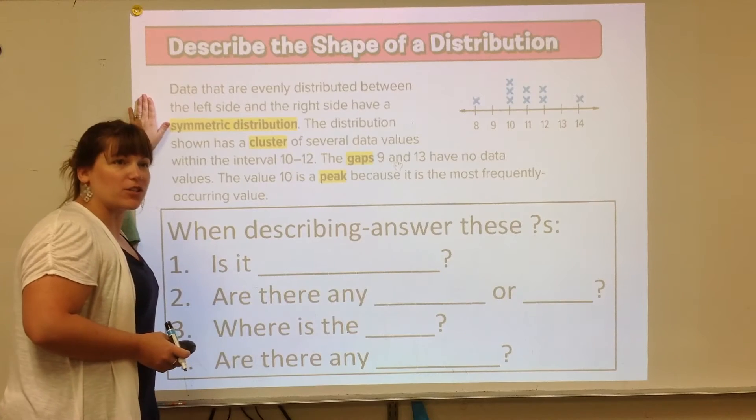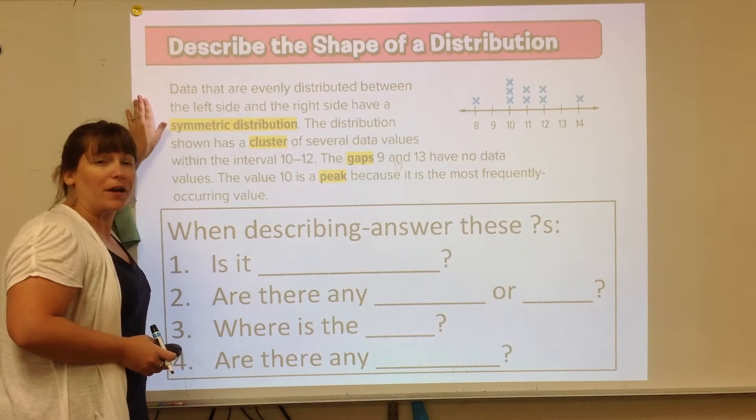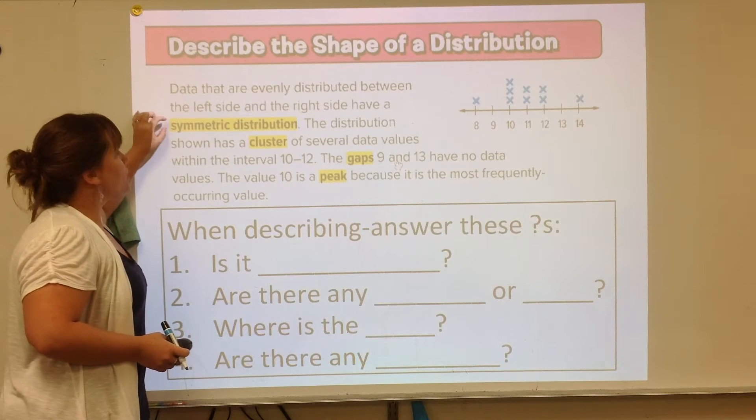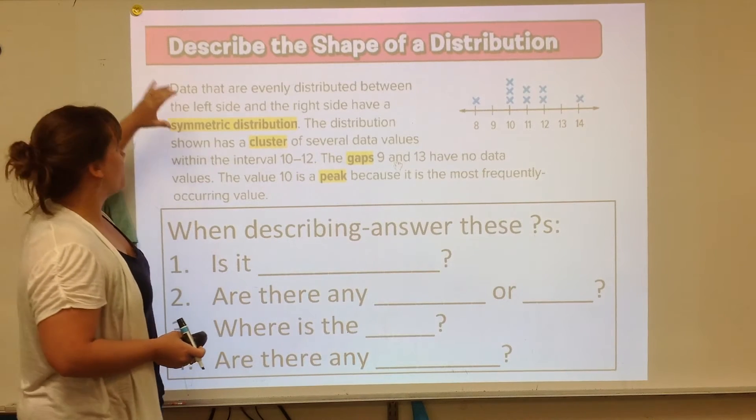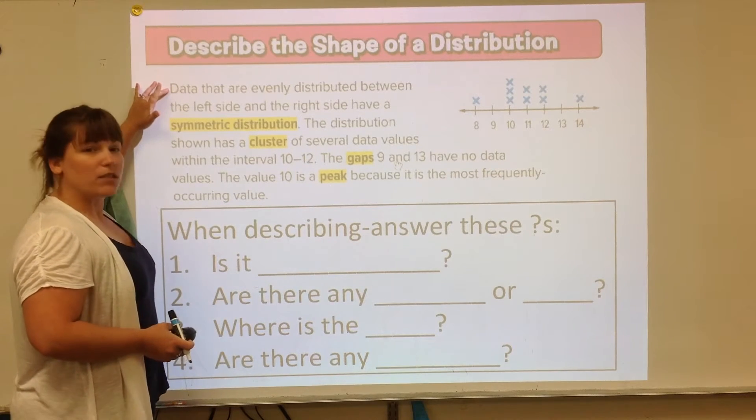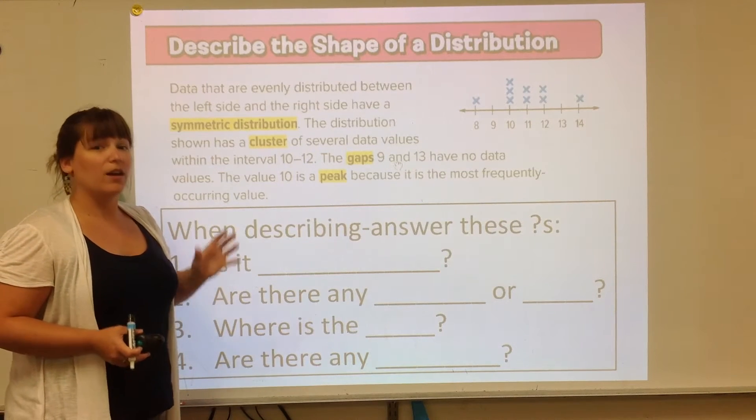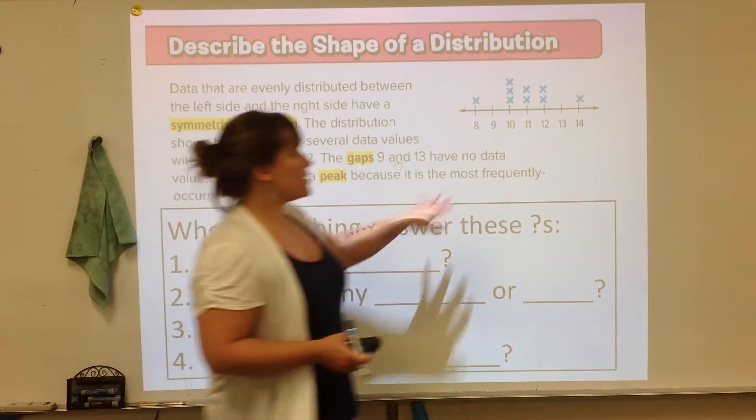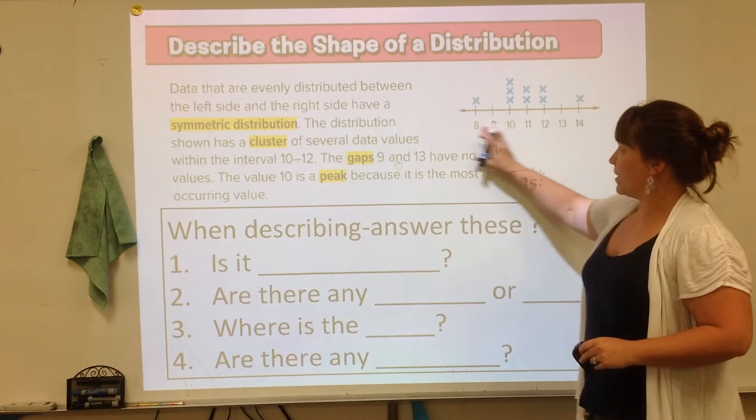This is a section in your math book that I actually took because it describes a line plot very well, and it talks about what symmetrical distribution is, putting the two vocabulary words together. So let's deal with that definition first. Data that are evenly distributed between the left and the right side, just like the word symmetric, have what's called symmetric distribution. And now this line plot over here is what the rest of this paragraph is talking about.